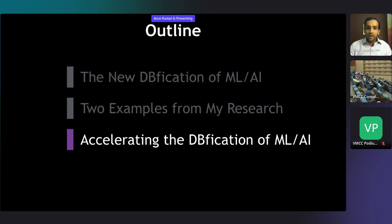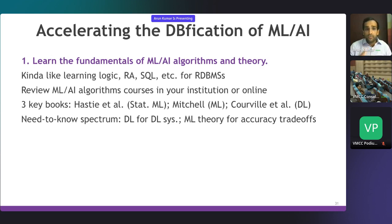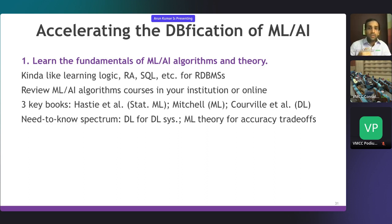How do we accelerate the DBification of ML? If you want to join this research direction, these are my thoughts based on my experience. First, you have to learn the fundamentals of ML algorithms and potentially ML theory—much like learning the basics of relational algebra and SQL if you want to work on relational DBMSs. Books by Trevor Hastie, Tom Mitchell, Aaron Courville, and others are great resources. You don't have to read everything upfront—if you're working on deep learning systems, understand deep learning algorithms; if you're working on ML accuracy trade-offs, understand bias-variance theory and recently double descent theory.